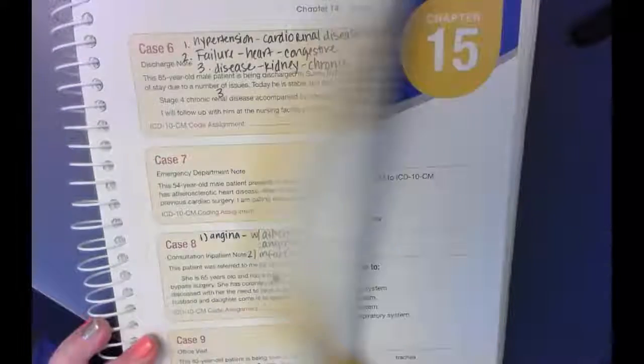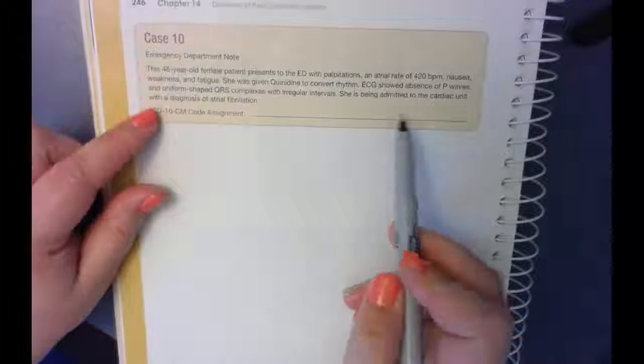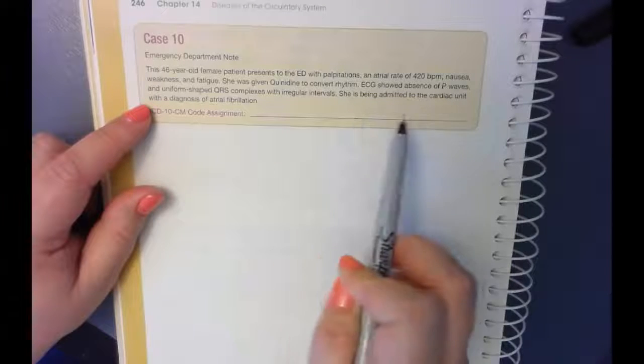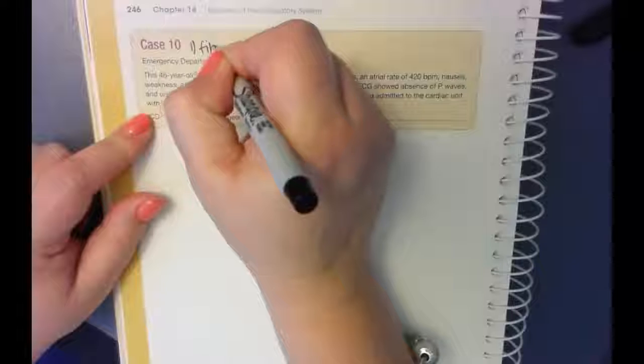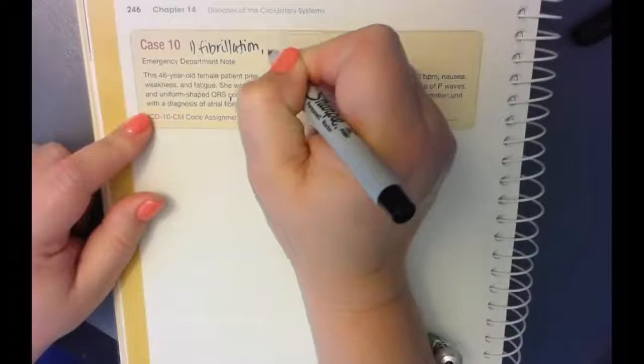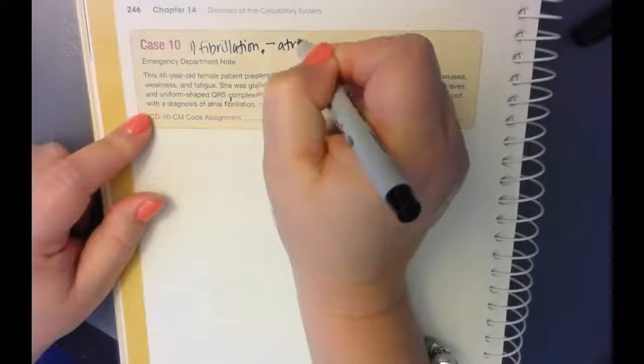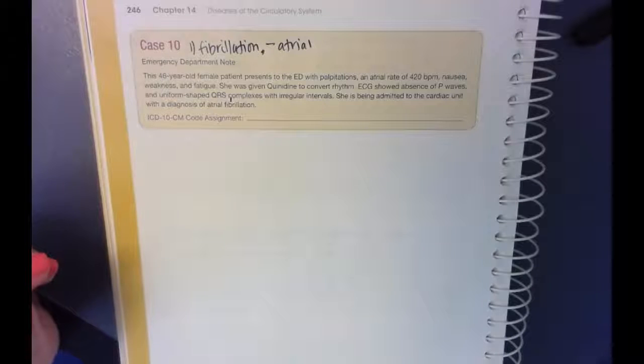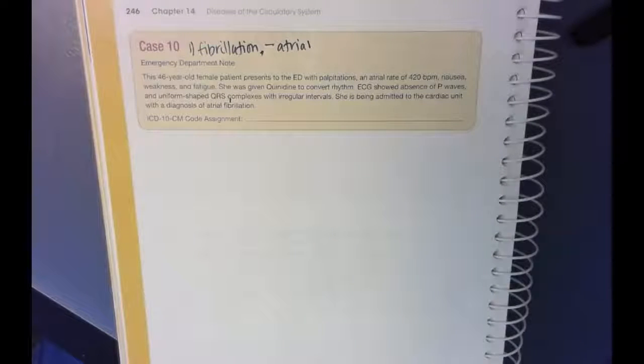And then lastly, case 10. So there's going to be one code here and you are going to look up fibrillation. So that's it for case 10. Case 10 is pretty easy. So that's all I've got for the case study help. If you have questions, then let me know and we will talk about it on Thursday. See you guys.